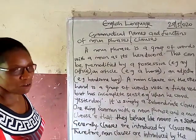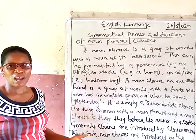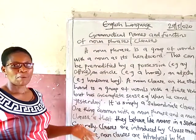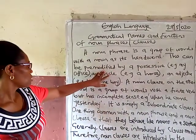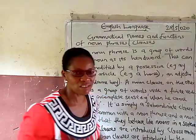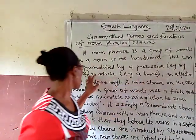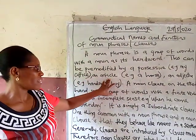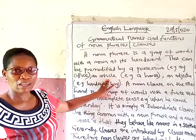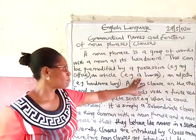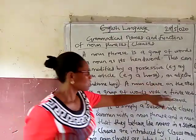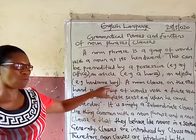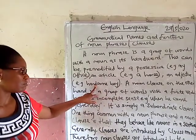As we all know, a noun phrase is a group of words with a noun as its head word. This noun phrase can be pre-modified by a possessive — for instance, 'my office', where the possessive is 'my'. It can also be pre-modified by an article, such as 'a' or 'an' — for instance, 'a horse'. Another pre-modifier is an adjective, for example 'handsome boy', where 'handsome' is the adjective.